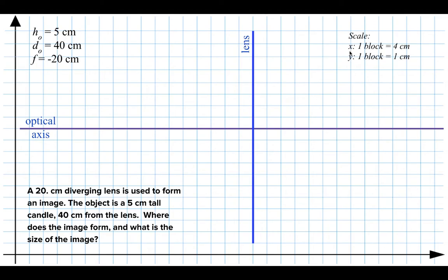A reasonable scale would be one block equals 4 centimeters in the x direction, and one block equals 1 centimeter vertically. I'll label my focal points on either side of the lens, just like with a converging lens, and draw my object which is 40 centimeters — or 10 blocks — from the lens.